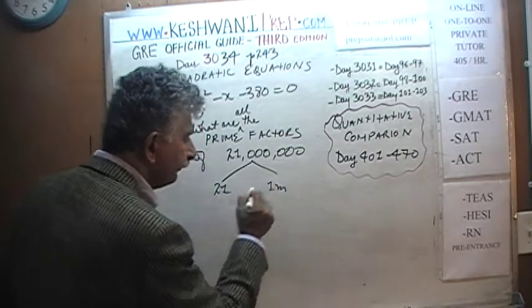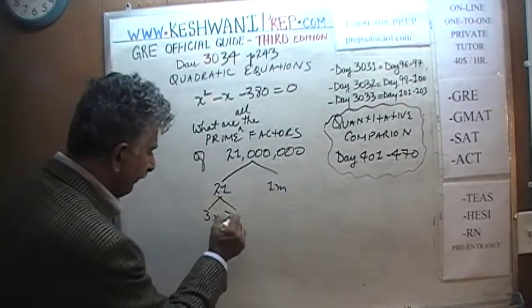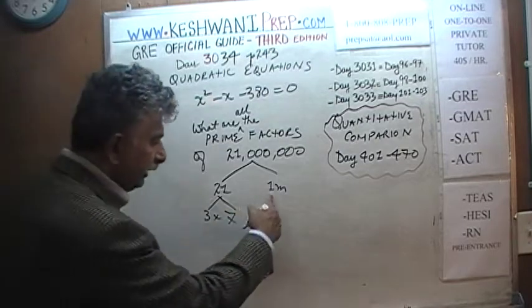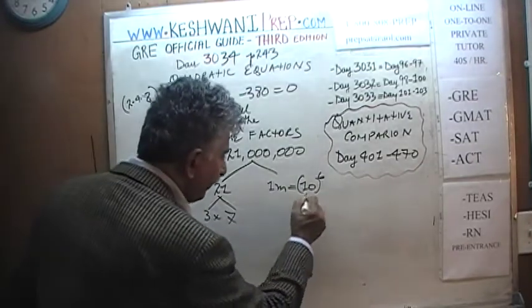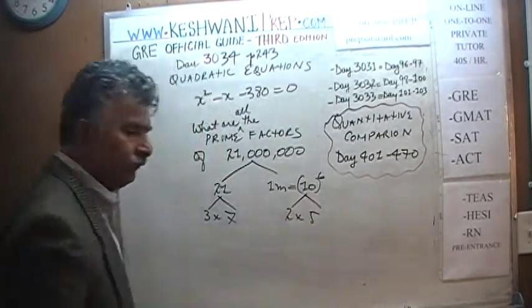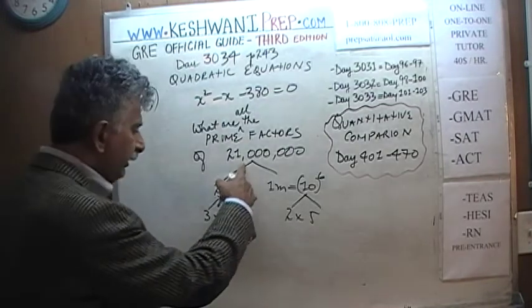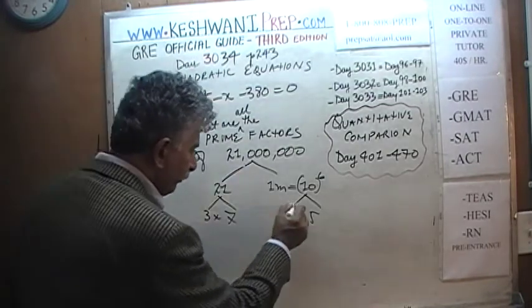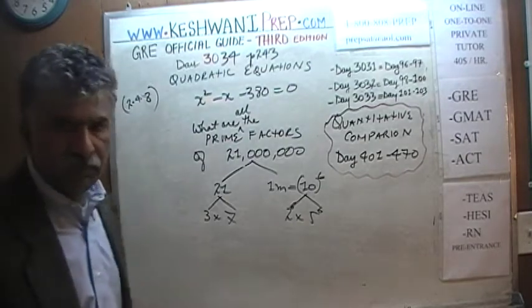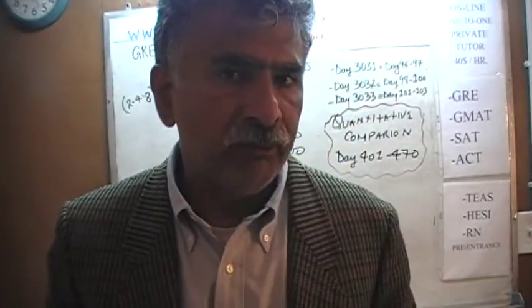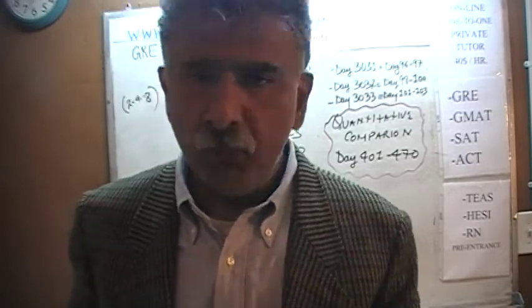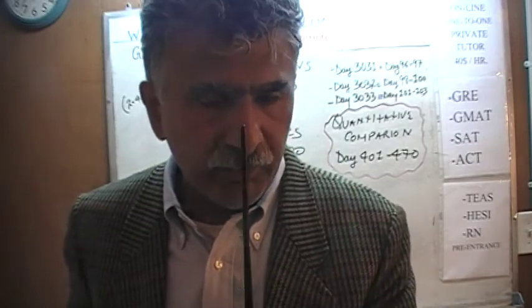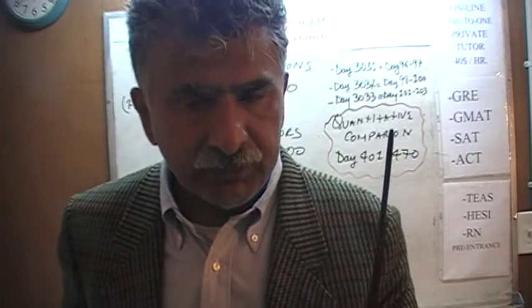Don't treat 21 million as a single number. Break it up into 21 and a million. 21 has prime factors of 3 and 7 — we're done with that part. A million is simply 10 raised to the 6th power, and 10 has prime factors of 2 and 5. So 21 million equals 3 × 7 × 2⁶ × 5⁶.